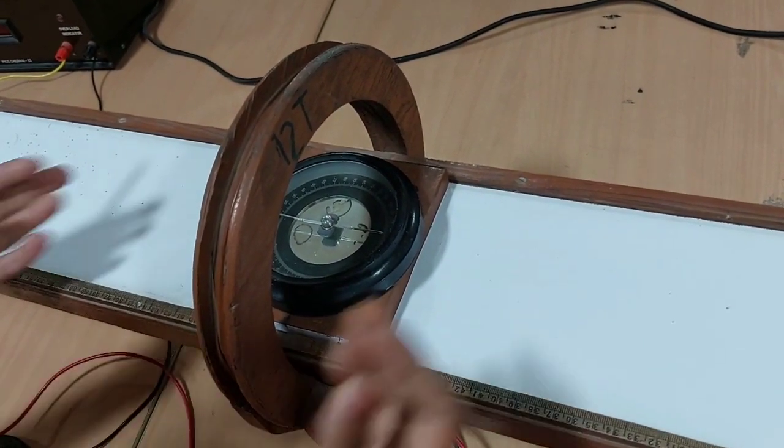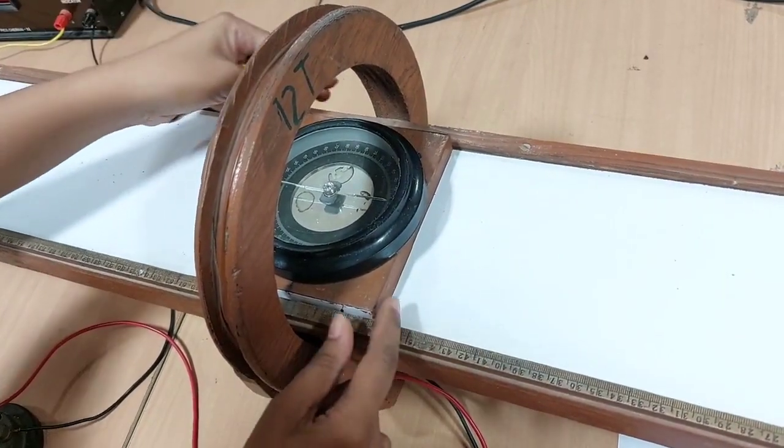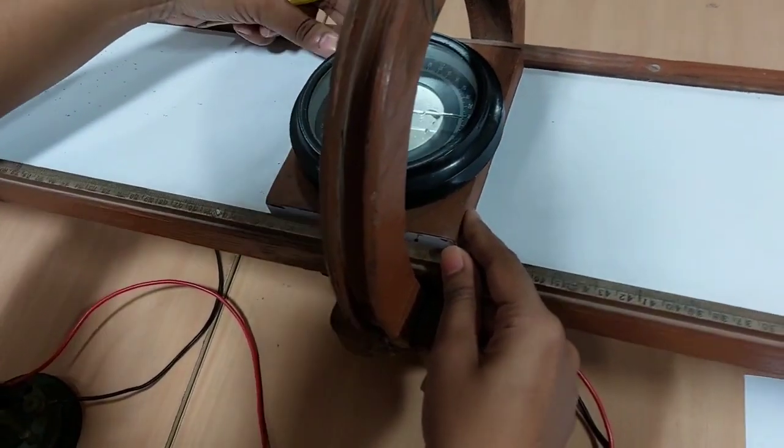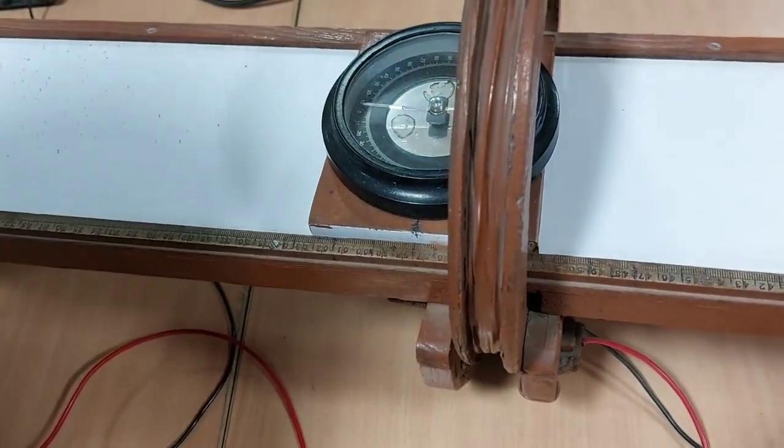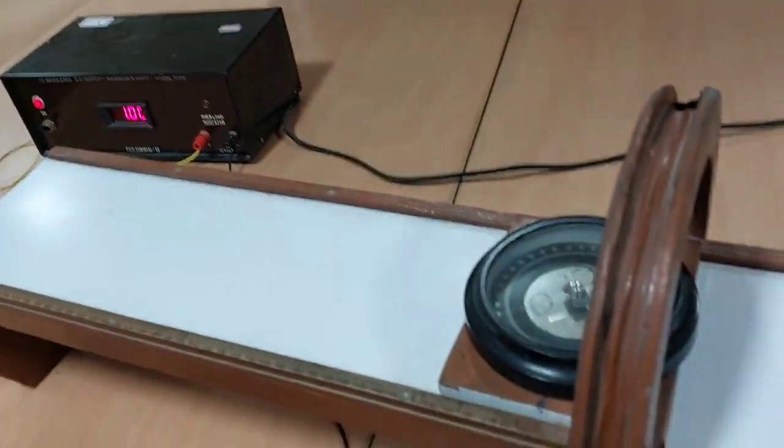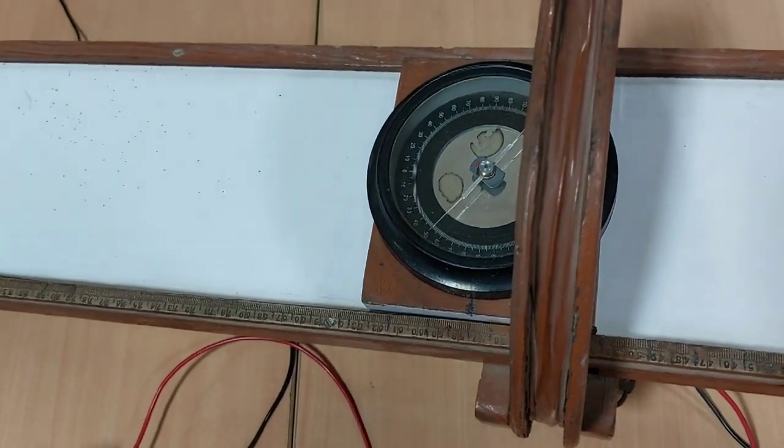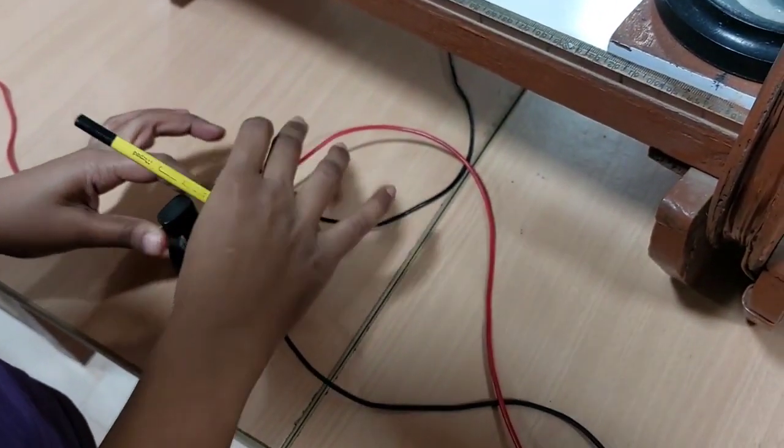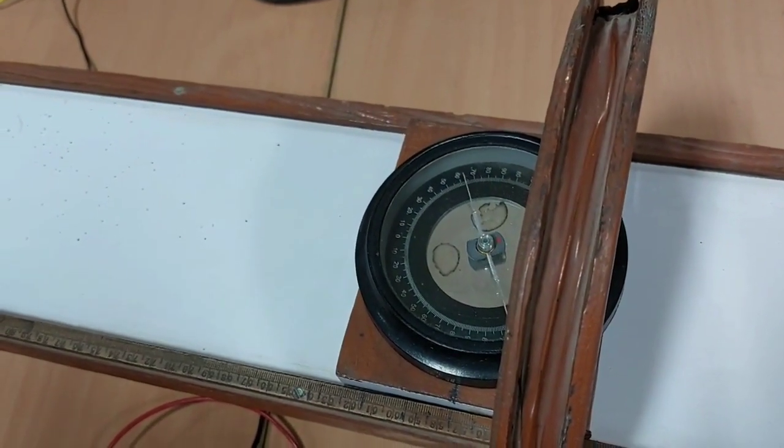So the first reading was when the compass is placed at x equals 0, that is exactly at the center of the workbench. Now we will move along the east arm at an interval of 2 cm and take the reading, switch on the power supply and see the deflection, and note down theta 1 and theta 2. Secondly, we will reverse the direction of the current and note down theta 3 and theta 4. And hence we can complete the tabular column as explained earlier.